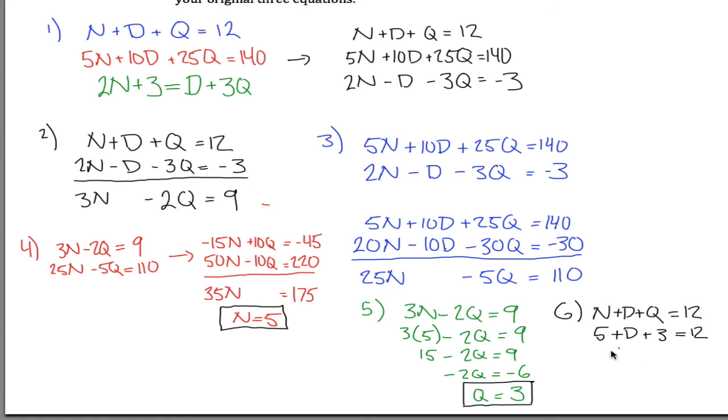So I want to solve this for D, I can combine like terms and say 8 plus D is 12, so if I subtract 8 from both sides, I get D is equal to 4.